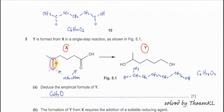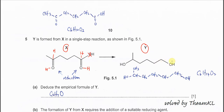This reduction involves the addition of two hydrogens. The oxygen gets one hydrogen and the carbon will get another hydrogen, forming a secondary alcohol. For the carboxylic acid, one of the oxygens will be removed and then one hydrogen is added here and another hydrogen here to form the primary alcohol.